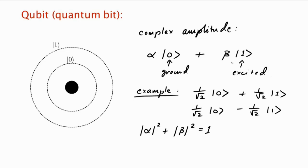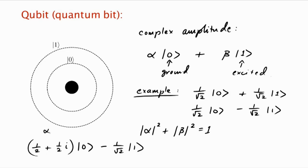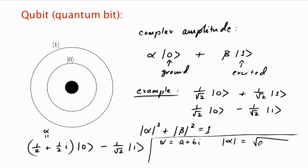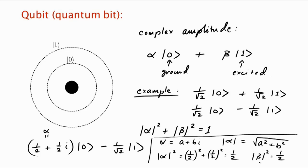Now, as I said, the amplitude is allowed to be complex. For example, you might have the state (1/2 + i/2)|0⟩ + (−1/√2)|1⟩. Is this state normalized? Well, if alpha = 1/2 + (1/2)i, recall that for a complex number alpha = a + bi, the magnitude is √(a² + b²). So |alpha|² = (1/2)² + (1/2)² = 1/2. And |beta|² is also 1/2, so it is a normalized state.